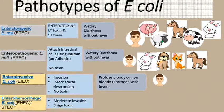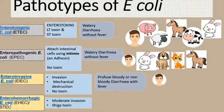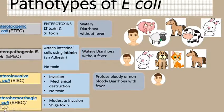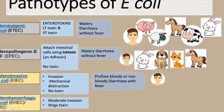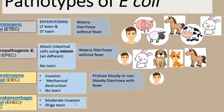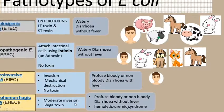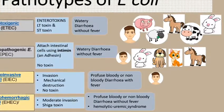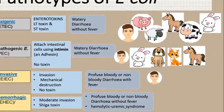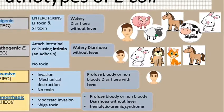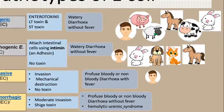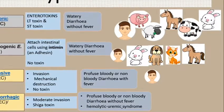The fourth one is enterohemorrhagic E. coli (EHEC), also known as STEC — Shiga toxin-producing E. coli — meaning they produce a toxin known as Shiga toxin, and they show moderate invasion. They cause profuse bloody or sometimes non-bloody diarrhea without fever. Other than that, it can also produce hemolytic uremic syndrome, where the animal has anemia, maybe bloody diarrhea, and finally the kidney will be affected and death will occur.